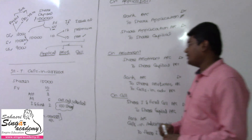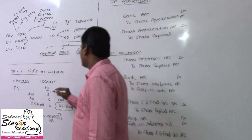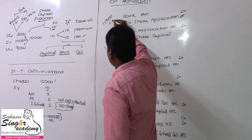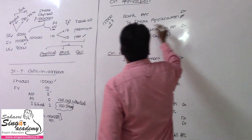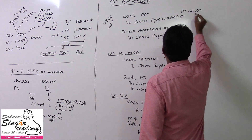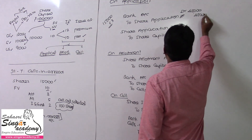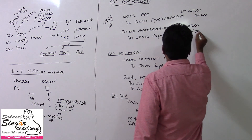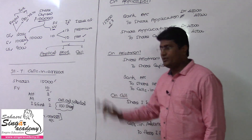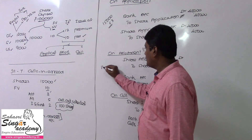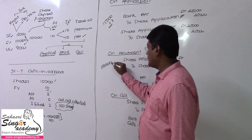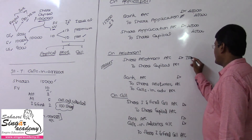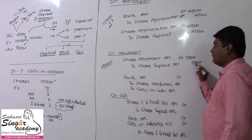15,000 shares multiplied by 3 rupees application gives 45,000 rupees — application received and transferred to share capital. The next entry is allotment. Allotment due is 5 rupees, so 15,000 shares. We receive that without any default.